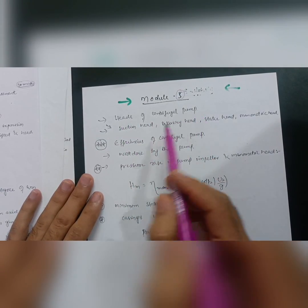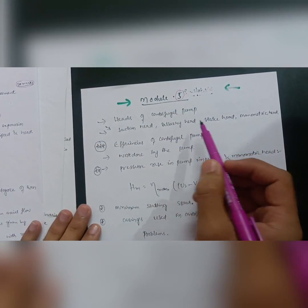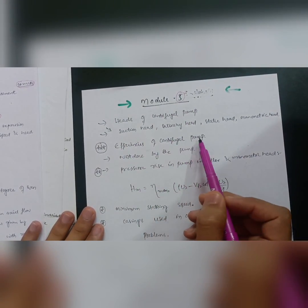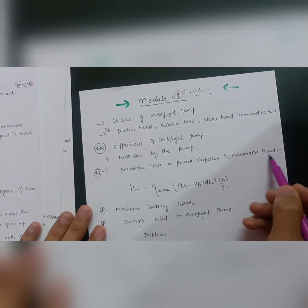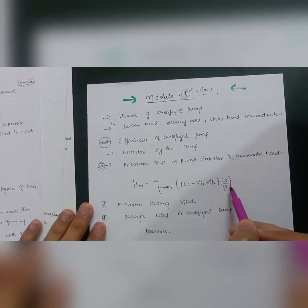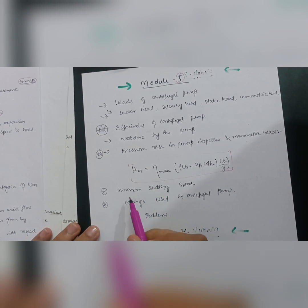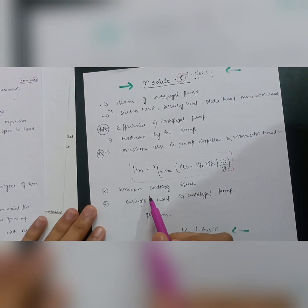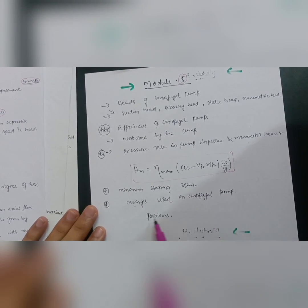In Module 5, the important theory topics are the heads of a centrifugal pump: suction head, delivery head, static head, and manometric head. Then cover efficiencies of the centrifugal pump, work done by the pump, and pressure rise in the pump impeller. The manometric head is given by: Hm = η_manometric · (U2 − Vf2·cotβ2) · U2 / g. Also cover minimum starting speed and casing types used in centrifugal pumps.